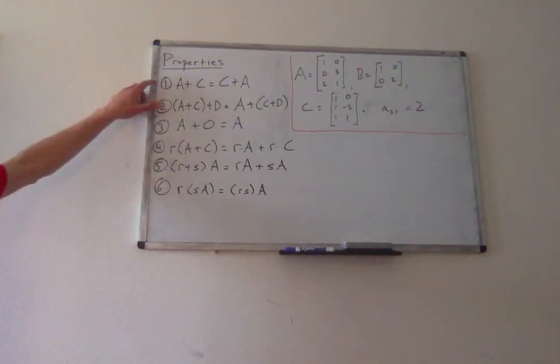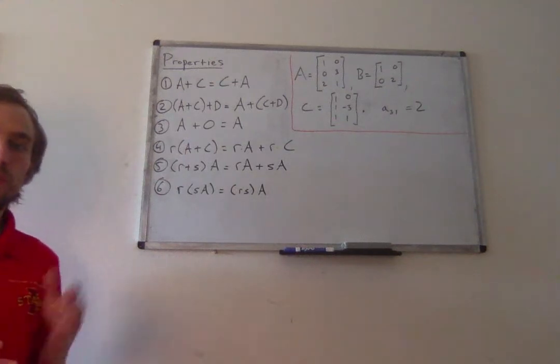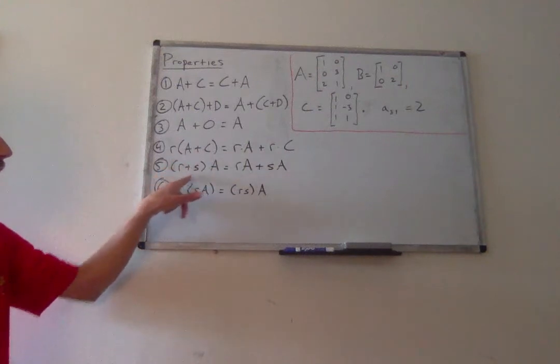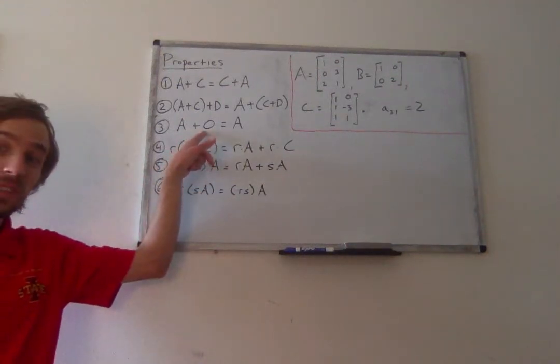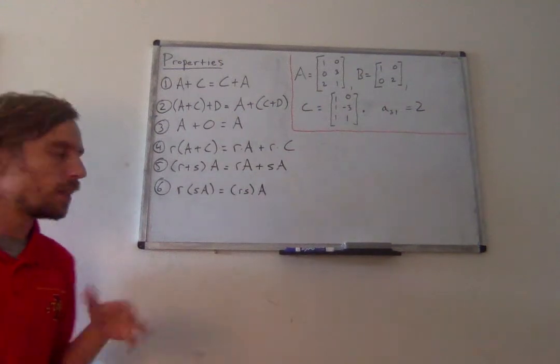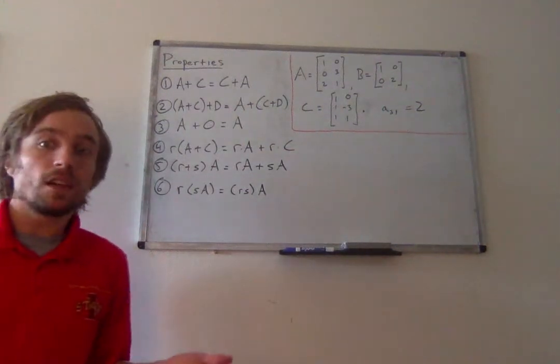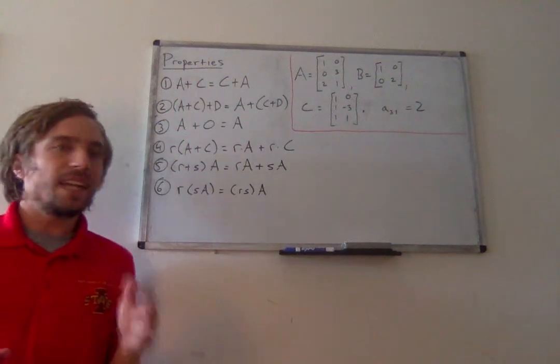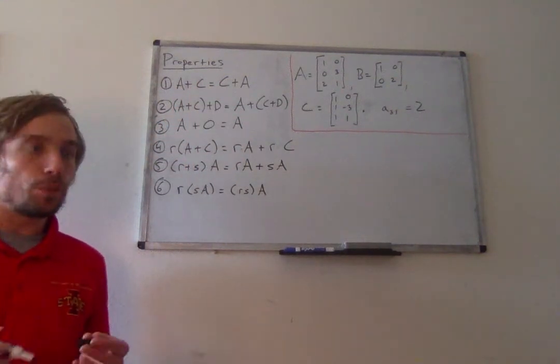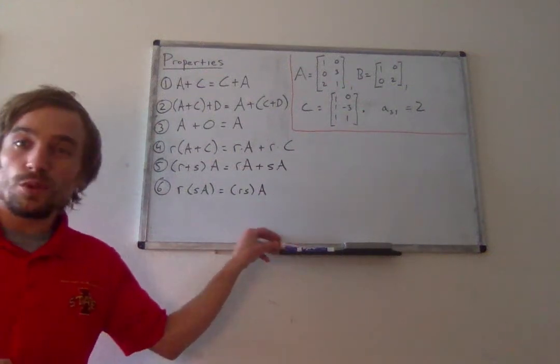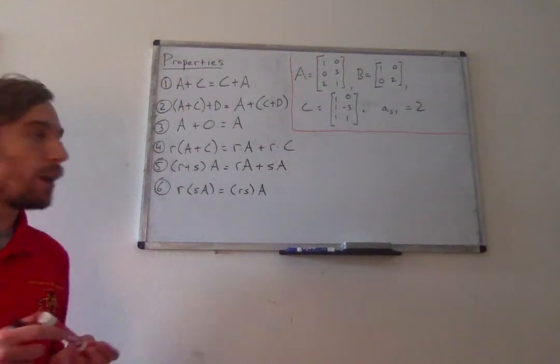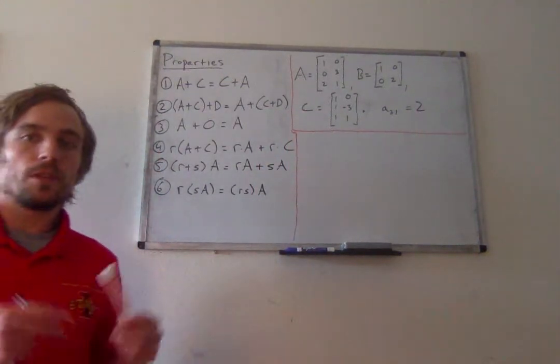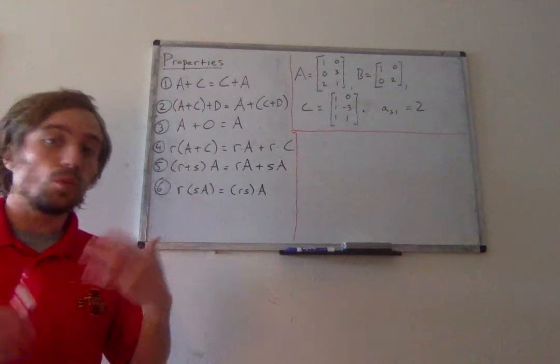So all of these should look extremely similar to vector properties we've studied. So here A, C, and D are all matrices. R and S are scalars. Here zero is the zero matrix. A little weird notation for that, but there's not many other ways to represent zero. So keep all of these in mind. Again, I think they were properties. They are properties. I would probably just intuitively use without really thinking about them. But it's important that we state them so that we can sort of accept that we've got these as valid things that work in all cases.